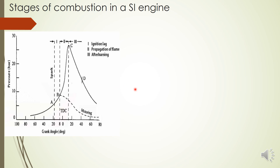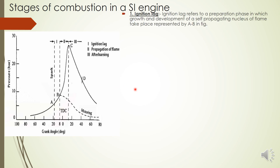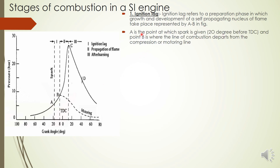The first stage is ignition lag, which refers to a preparation phase in which the growth and development of a self-propagating nucleus of flame takes place. Stage A to B denotes the time required for development of this nucleus of flame. Point A is where the spark is given — in an actual engine, spark is given before TDC, here at 20 degrees before TDC.